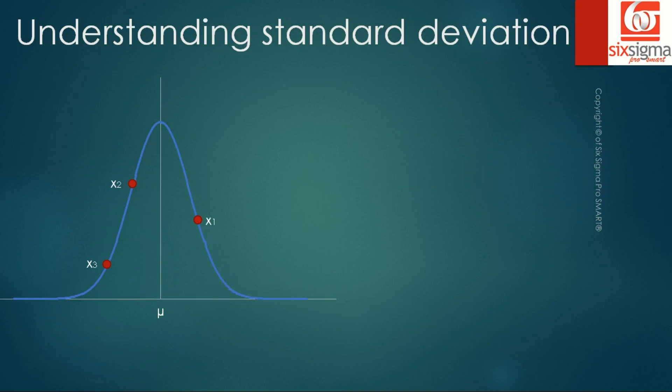It'll be good to know how standard deviation is arrived at. And to explain this, we'll consider only three data points. Let's say we have a curve which has a mean of mu and there are three data points x1, x2, and x3 which are at a distance of d1, d2, and d3 from the center line which is the mean. Now we can easily calculate d1, d2, and d3 as x1 minus mu, x2 minus mu, and x3 minus mu.